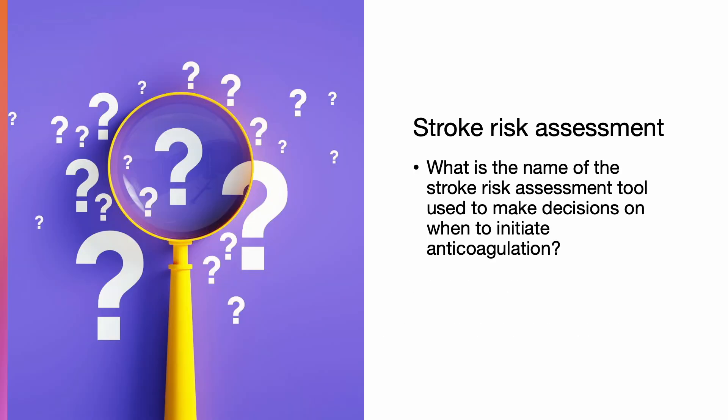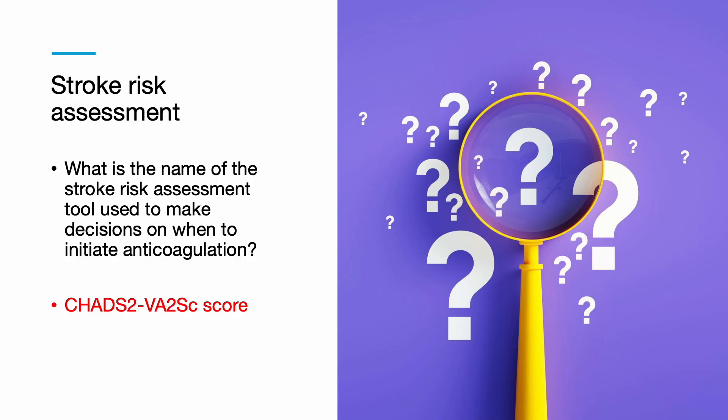What is the name of the stroke risk assessment tool used to make decisions on when to initiate anticoagulation? The stroke risk assessment score is called a CHADS-VASc score.